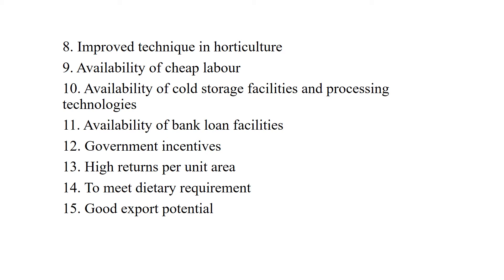High returns per unit area are a key benefit — the average production of horticulture crops is many times more than agronomical crops, and therefore net returns are also more. To meet dietary requirements, the per capita consumption of fruits in India is very low. In the USA it is 202 kg per capita per year; in Pakistan it is 100 kg per capita per year; while in India it is only 93 grams per capita per day, whereas the requirement is 120 grams per capita per day. With more efficient production and marketing, prices could be reduced to increase consumption while still providing good profit to growers.